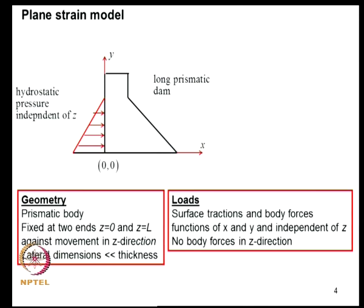Another 2-dimensional model briefly touched upon at the end of the previous lecture is the plane strain model. The geometry is again prismatic, but here the thickness of the object is much greater than the lateral dimension. For a model to be treated as plane strain in the XY plane, the object should be prismatic along the Z axis and fixed at two ends Z=0 and Z=L against movement in the Z direction, with lateral dimension much smaller than the thickness. The loading should be such that surface traction and body forces are functions of X and Y alone, independent of Z, with no body forces in the Z direction.